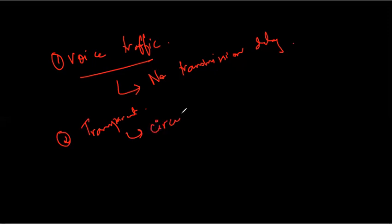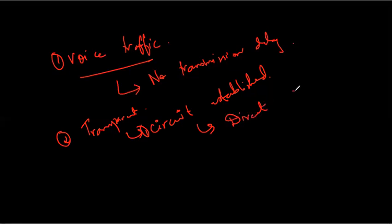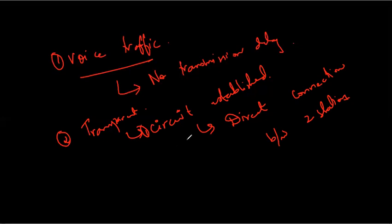Circuit switching is still used predominantly because of voice transmission. Even in today's digital world it remains attractive for both LANs and WANs. Once a circuit is established, it remains as a direct connection between the two stations with no collision risk, and no additional protocols need to be applied. For this reason, circuit switching networks are still used in the real world.